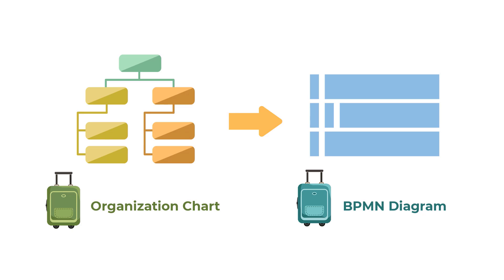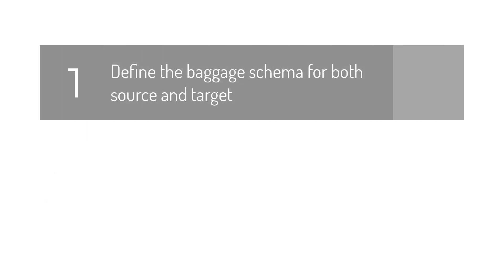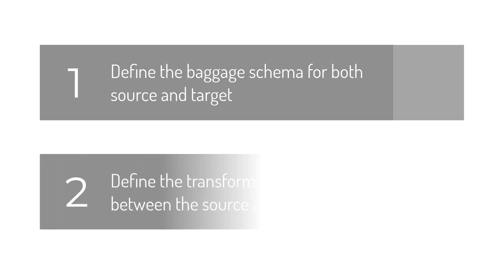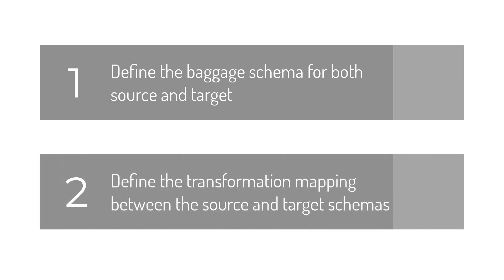The transformation involves two steps: define the baggage schema for both source and target — which is the organization chart and business process diagram in this case — and define the transformation mapping between the source and target schemas.